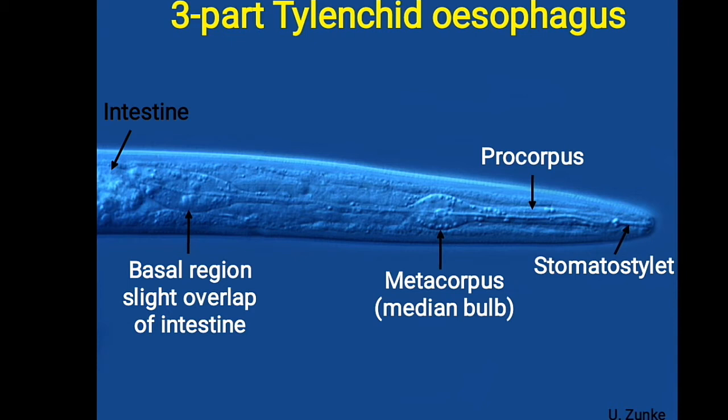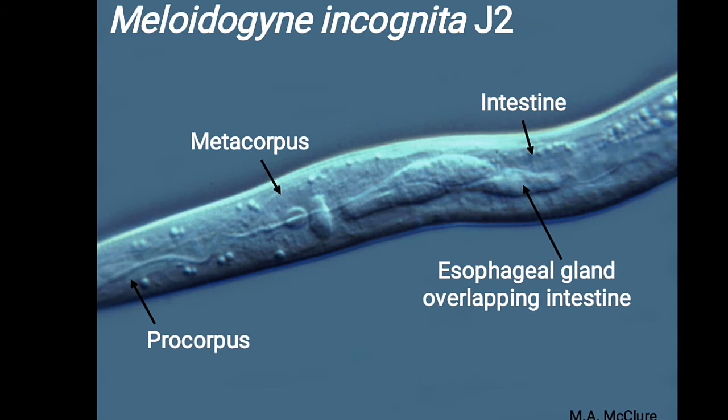For a detailed study of the esophagus, please refer to Nematology at a Glance Part 2 of this video series. Here, Meloidogyne incognita is given as an example, having a procorpus, metacorpus, and an overlapping esophageal gland over the intestine.